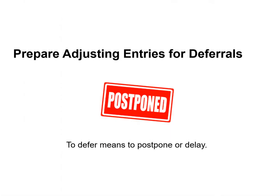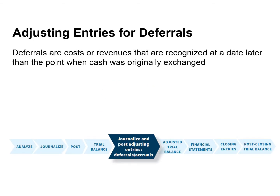In this video, we will prepare adjusting entries for deferrals. To defer means to postpone or delay, so these adjusting entries are recognizing both revenues and expenses that were initially deferred or postponed. Deferrals are costs or revenues that are recognized at a date later than the point when cash was originally exchanged. The two types of deferrals are prepaid expenses and unearned revenues.